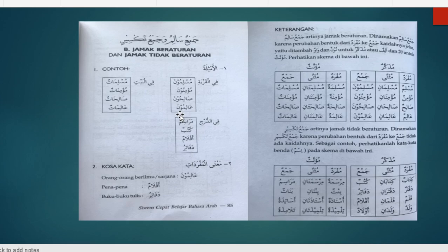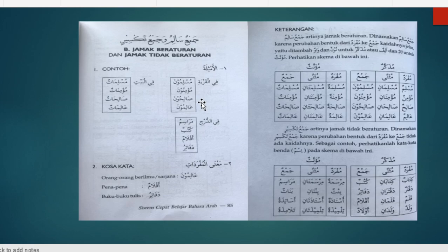Kalau kita artikan: Filqaryati Muslimuna — di kampung itu ada banyak orang-orang Muslim. Di kampung itu ada banyak orang-orang Mu'min. Di kampung itu ada banyak orang-orang Salih. Filqaryati Alimuna — di kampung itu ada banyak orang-orang Alim. Jadi cara mengenali Jama' Mudzakkar Salim adalah dengan tambahan Waw dan Nun di akhir isim.